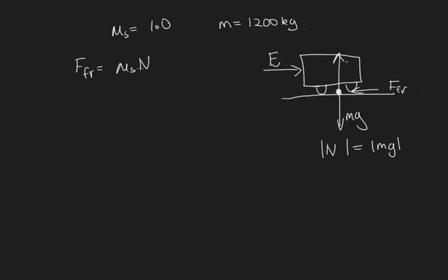We can substitute everything in here now. We know that this is μs times mg. μs is 1.0, the mass of the car is 1,200, and g is 9.8 meters per second per second. So substituting that in, we end up with 11,760 newtons. So we need to push it with this force just to start it moving.